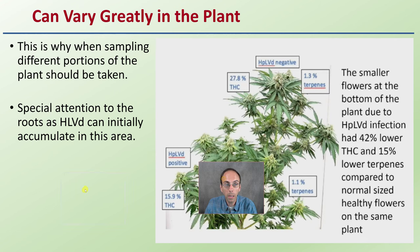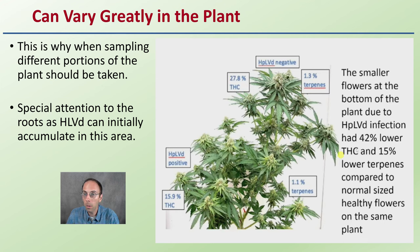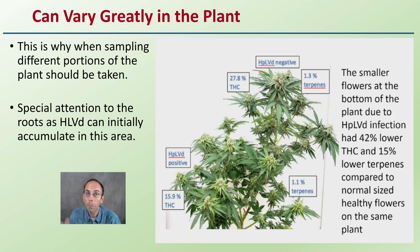This can vary greatly on the plant, which is why when sampling, different portions of the plant should be taken. Special attention to the roots, as Hop Latent Viroid can initially accumulate in this area. You can see here where we're getting Hop Latent Viroid negative and positive results. The THC percentage went from 27.8 down to 15.9, and we lost some terpenes. The smaller flowers at the bottom of the plant due to infection had 42% lower THC and 15% lower terpenes compared to normal-sized healthy flowers on the same plant.